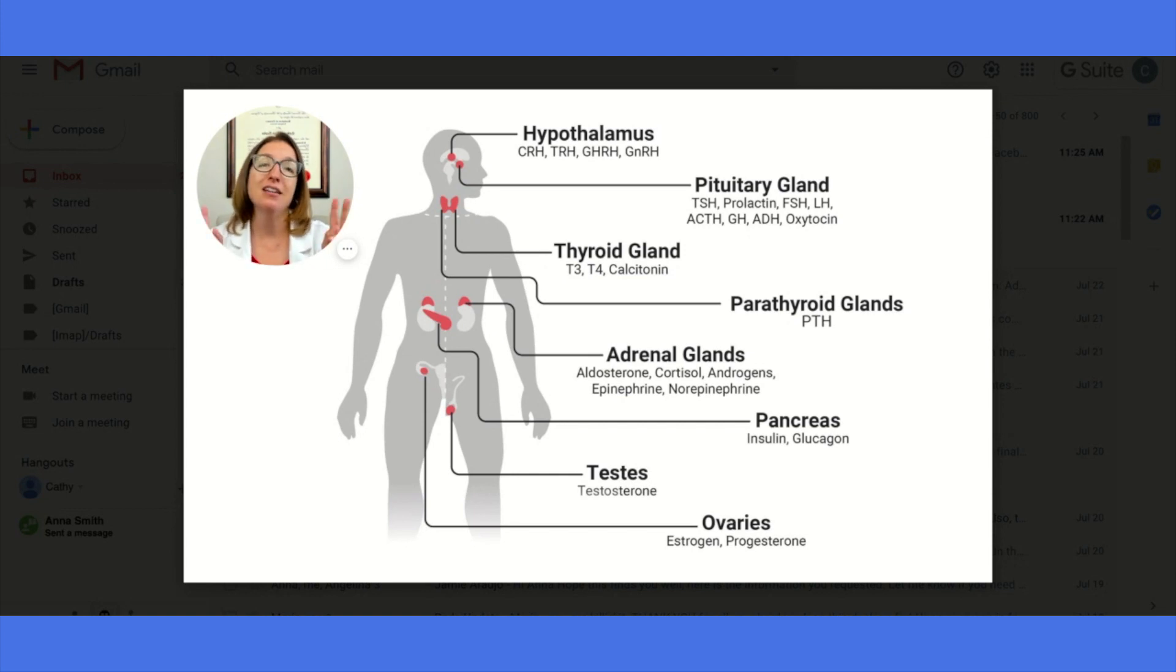You notice that all four of these end in releasing hormone. And then if you look at the first letter of each of these hormones, we have CTGG. And my little mnemonic I use to help me recall these hormones is cutthroat good game. So that was a cutthroat game, but good game anyway, and that's just my silly way to remember these hormones.